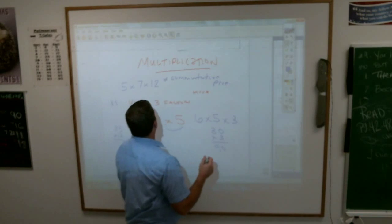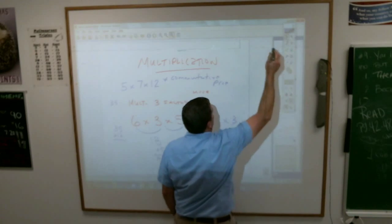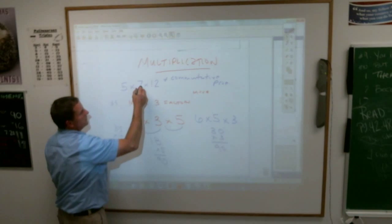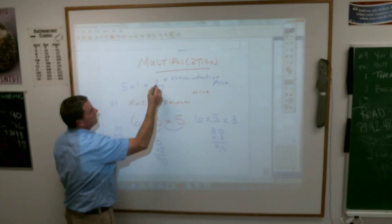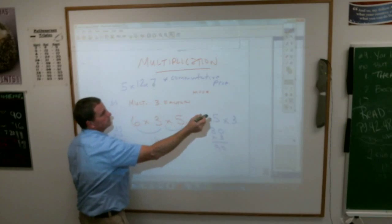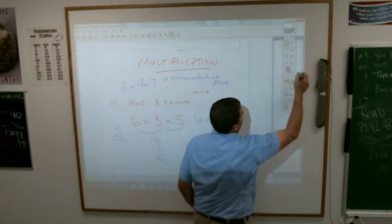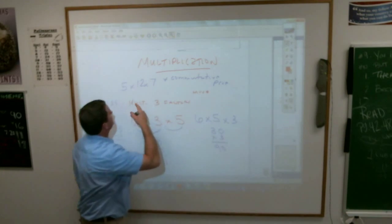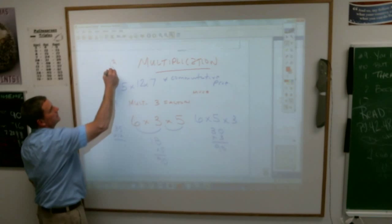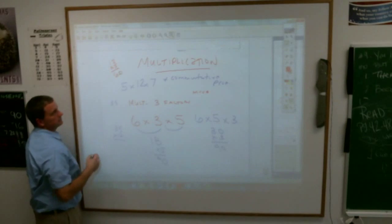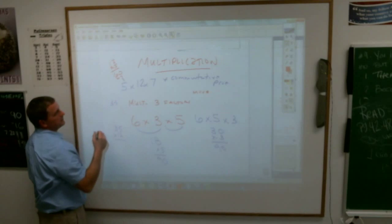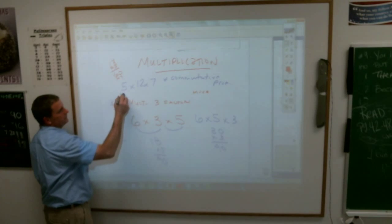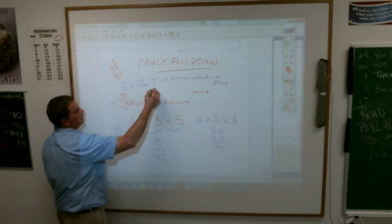You'd move the twelve and the seven. Right, kind of flip-flop the twelve and the seven. And the reason you would do that is because five times twelve is sixty, and then sixty times seven you should be able to do. That's not too hard, what is sixty times seven? It's a zero down, seven times six is forty-two, four hundred twenty.